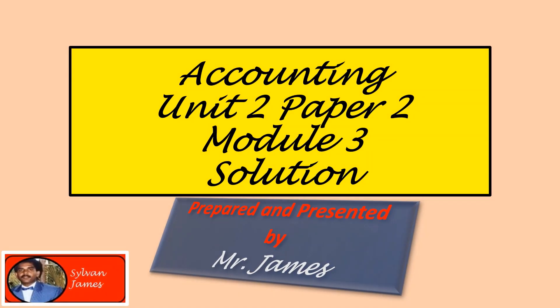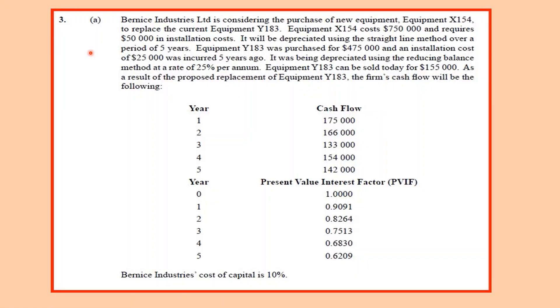Welcome to another Mr. James accounting tutorial. Today we'll be looking at Unit 2, Paper 2, Module 3, 2015 solution by Mr. James. We have here Part E, given some data in paragraph form and two columns — one for cash flow and one with the present value interest factor. Before we get into the question itself, let's see what is required.